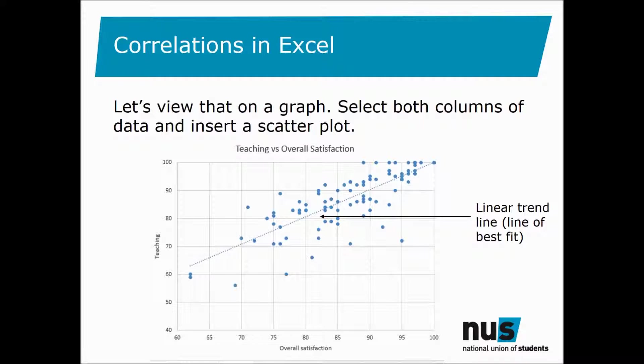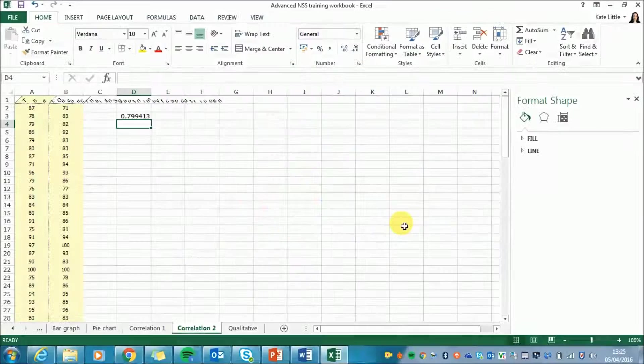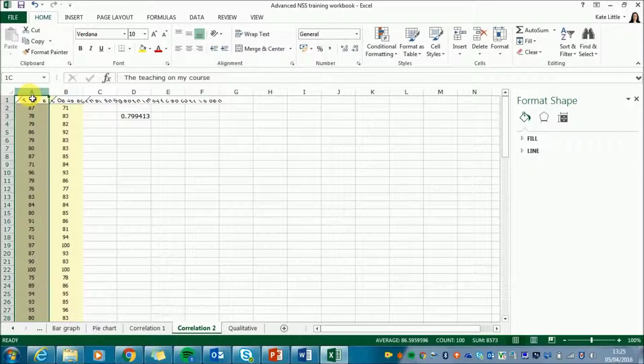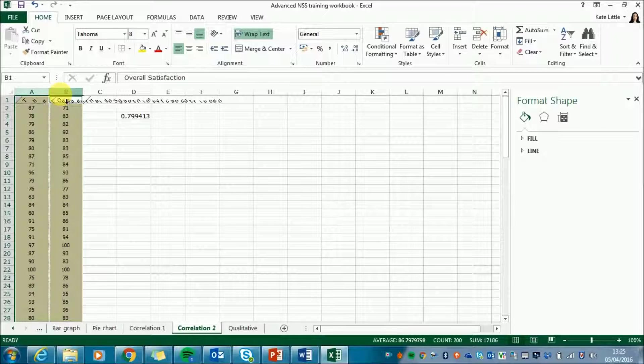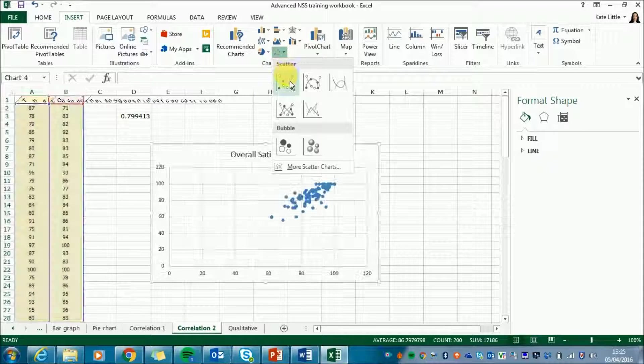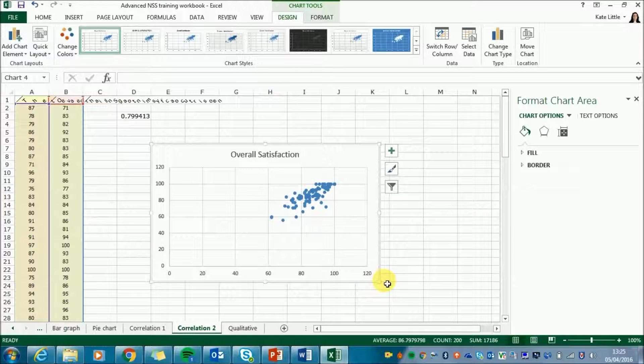We can also look at the same data on a scatter plot to better illustrate the strong correlation. So to create our scatter plot, again we need to start by selecting our data, columns A and B. We'll go to insert and see a picture of a scatter plot and choose that.